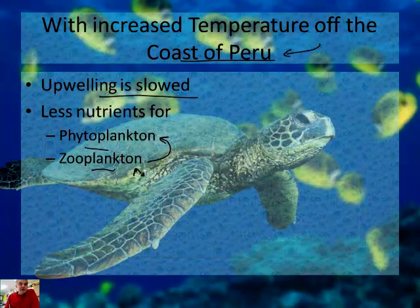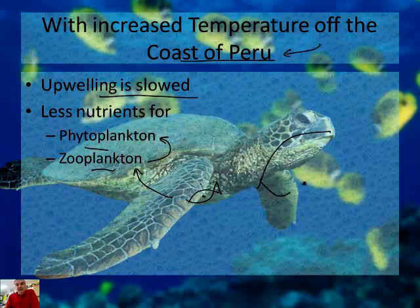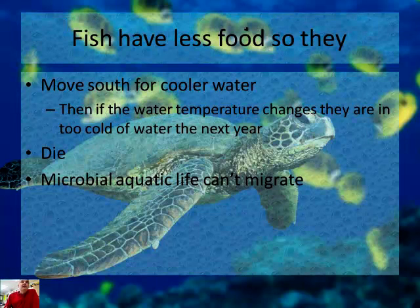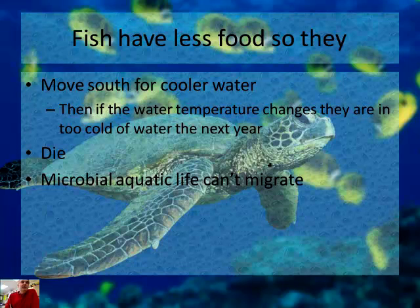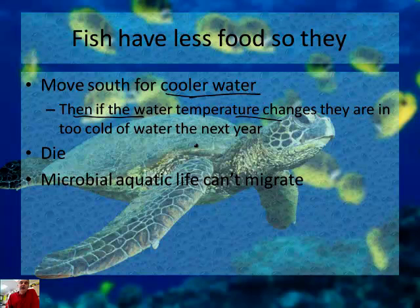And then other critters — fish — eat the zooplankton. And bigger fish eat the little fish. That's how the food chain works. So in an El Niño year, there is less food for the fish, or just the aquatic or marine life. So what they will do is move south for cooler water — they're looking for nutrients, and so the fish will swim. But then there's a problem: if the following year the temperature changes, now they're in water that's too cold for them, and they will perish — they will die.